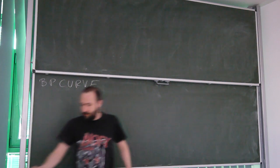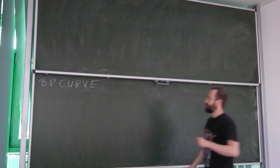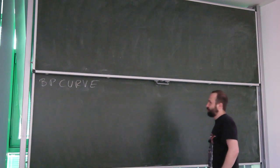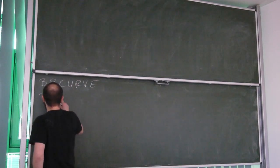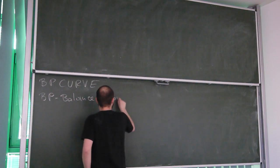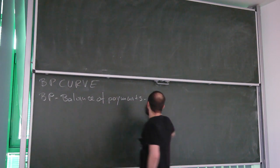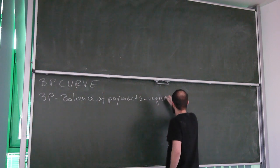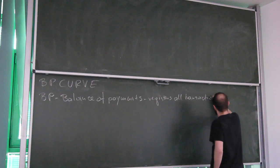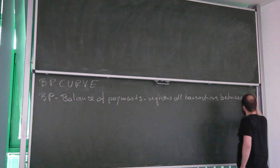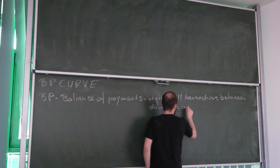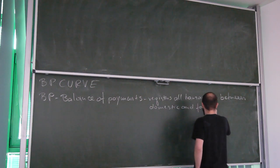So, now with IS-LM curves being out of the way, we can move on to BP curve, the final curve in IS-LM-BP model. BP stands for Balance of Payments. It registers all transactions between domestic and foreign residents.